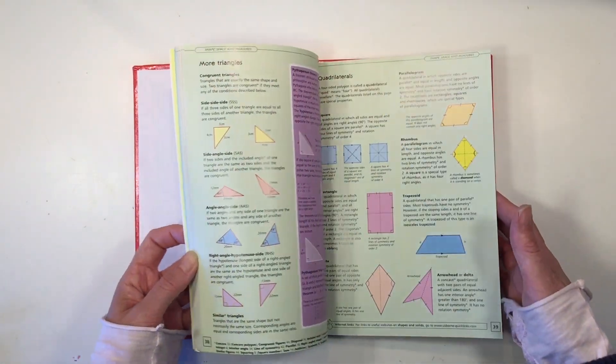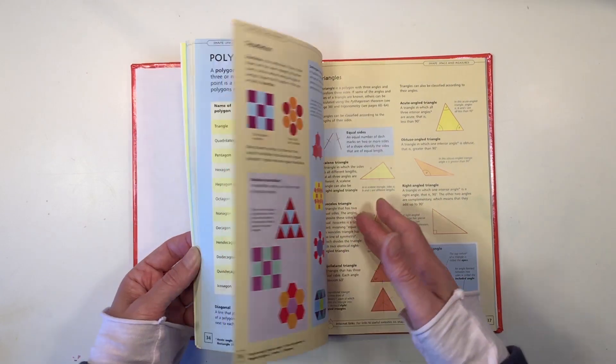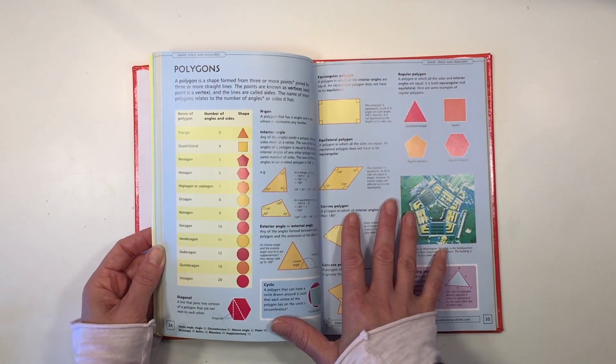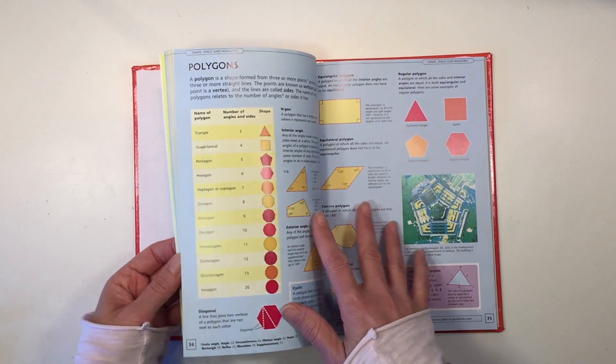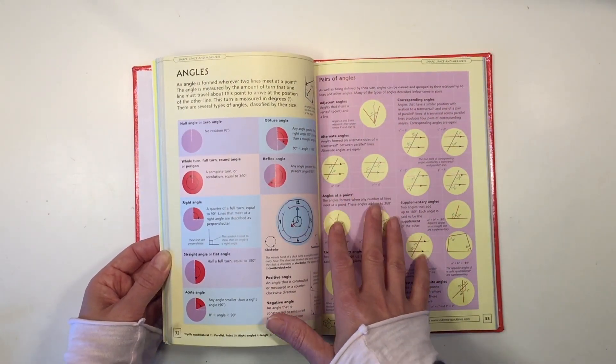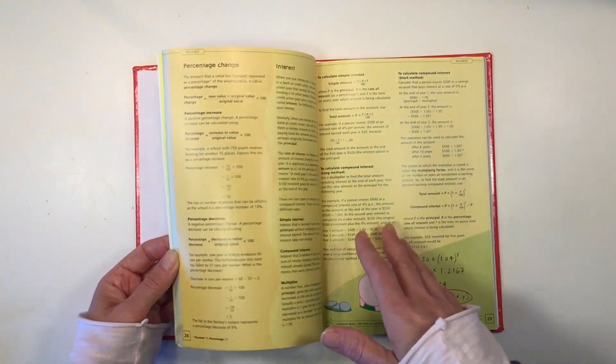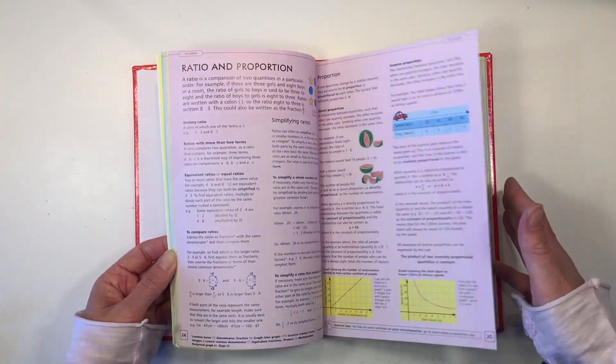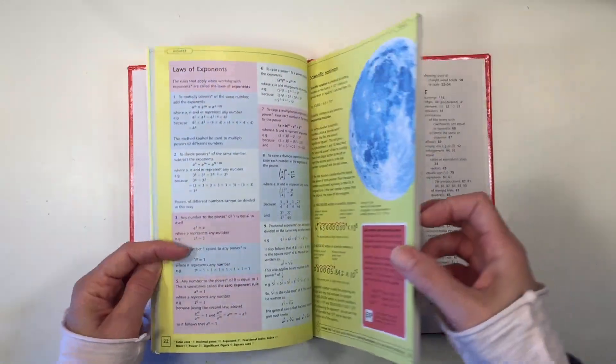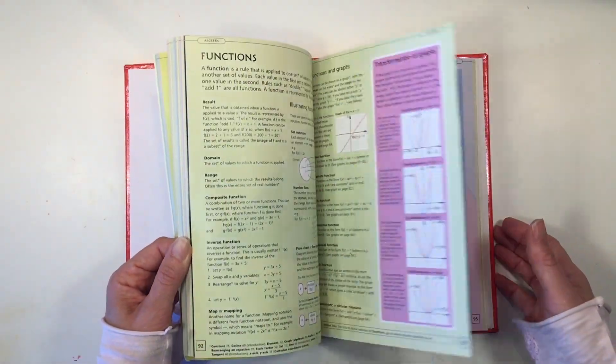So this book I think would be a really great reference material for you to have on hand. I think that it would complement any math curriculum. I think it's great for you as a teacher or as a parent or a homeschooler to have on hand if you need to refresh yourself with some of these math concepts that maybe you forgot. I know that we know a lot, but when it comes to teaching it's nice to have something to refer to.